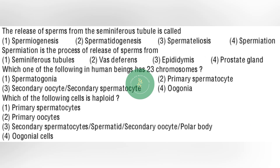Next question: the release of sperms from the seminiferous tubule is called — it is option number 4: spermiation. Next question: spermiation is a process of release of sperms from — it is option number 1: seminiferous tubules. Next question: which one of the following in human beings has 23 chromosomes? — it is option number 3: secondary oocyte or secondary spermatocyte.